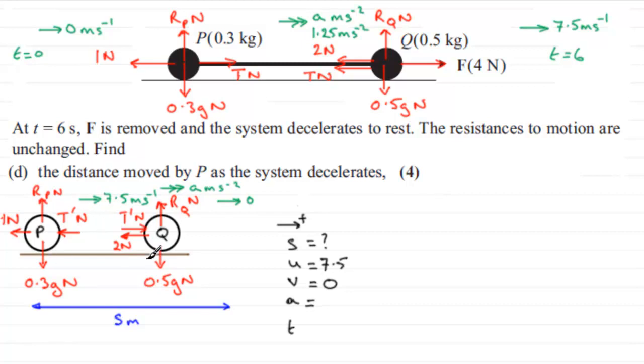But if we consider the whole system, P and Q, moving with this acceleration, then the T dash values will cancel out. So that's the way that I'm going to go. I'm going to consider both P and Q together and resolve in a horizontal direction, taking positive to the right.